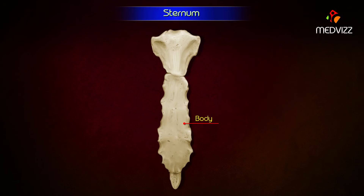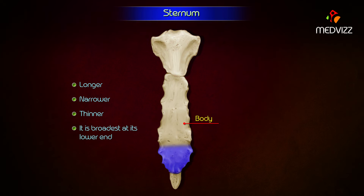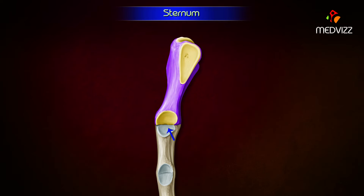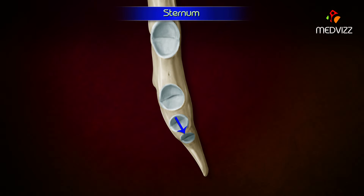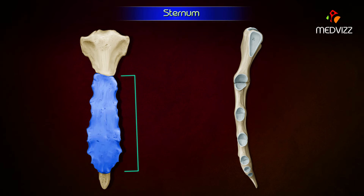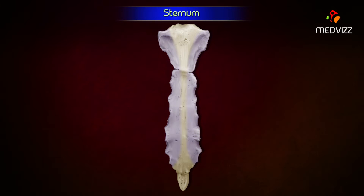Body. The body is longer, narrower, and thinner than the manubrium, and is broadest at its lower end. Its upper end articulates with the manubrium at the sternal angle to form the manubriosternal joint. Its lower end articulates with the xiphoid process to form a primary cartilaginous xiphosternal joint. Its anterior surface presents three faint transverse ridges indicating the lines of fusion of four small segments called sternebrae. The anterior surface of each side gives origin to the pectoralis major muscle.